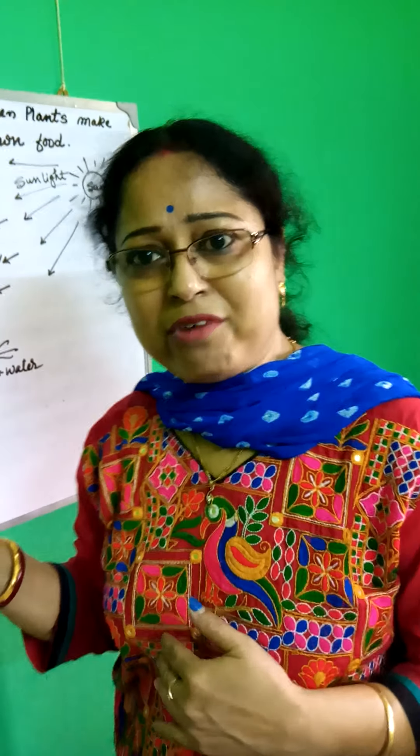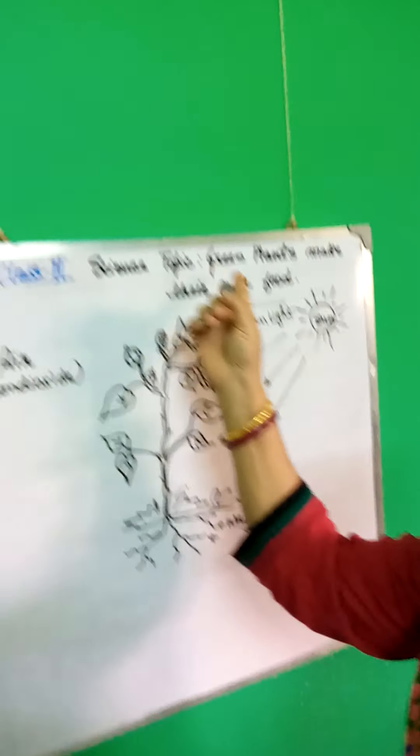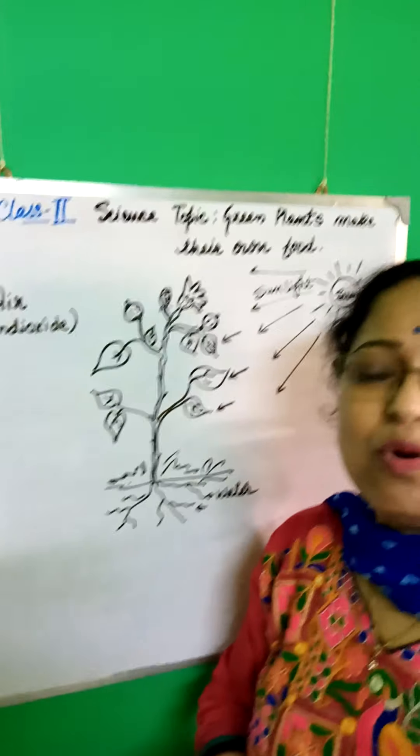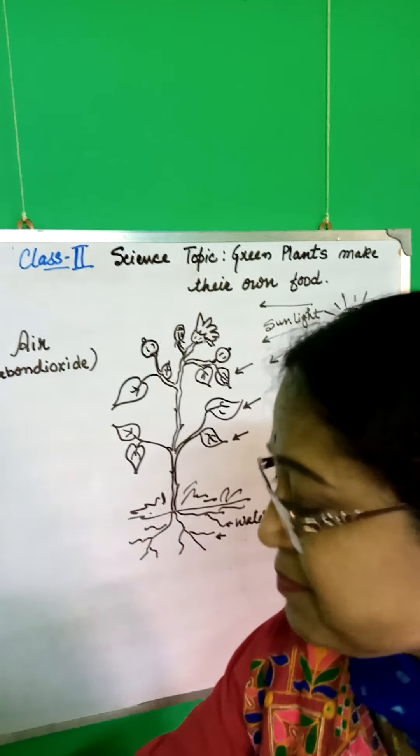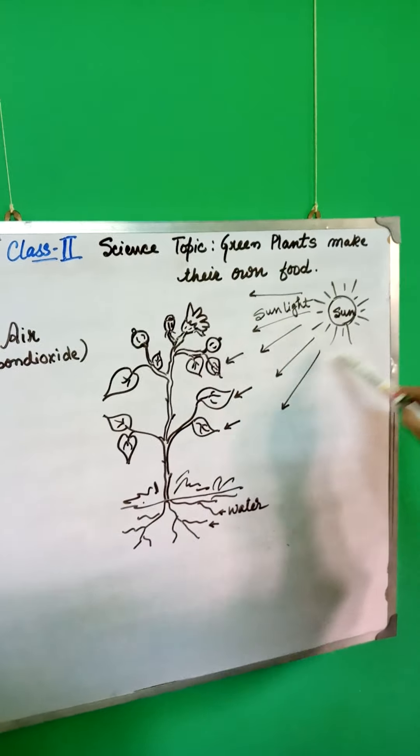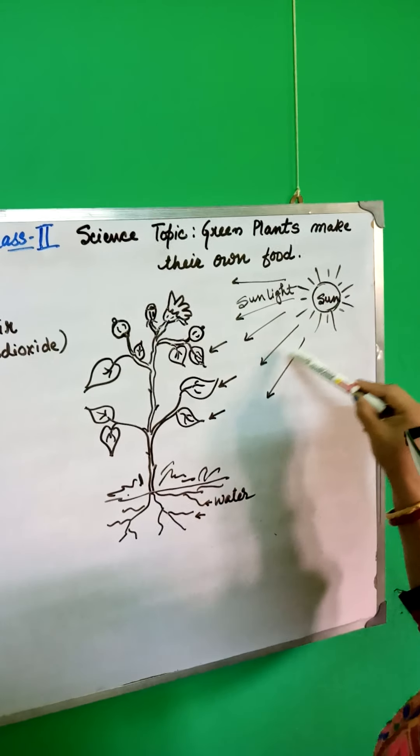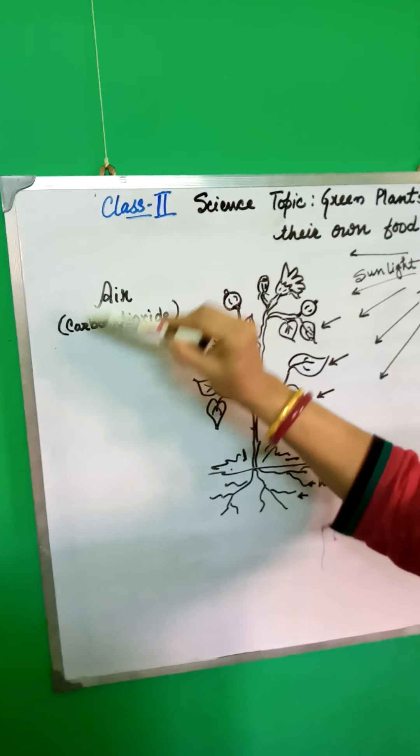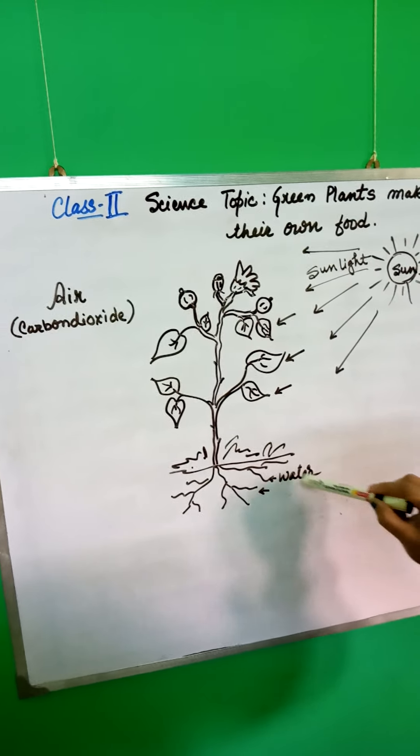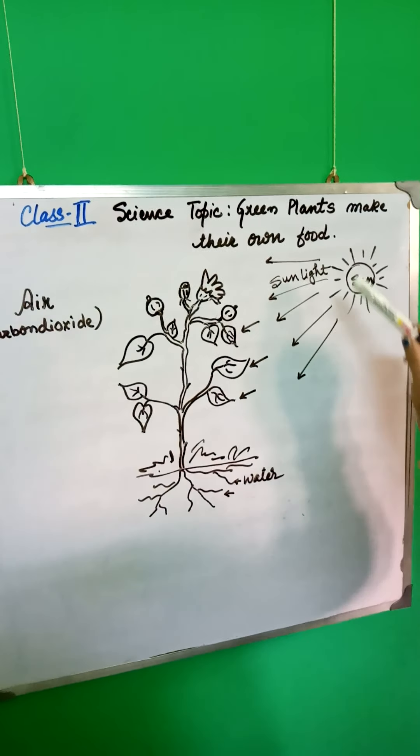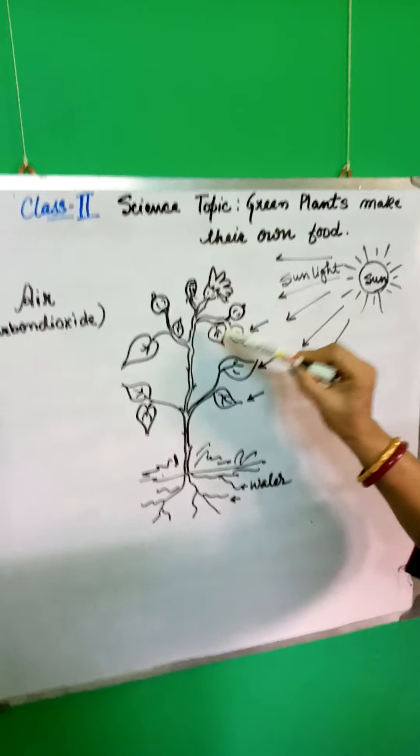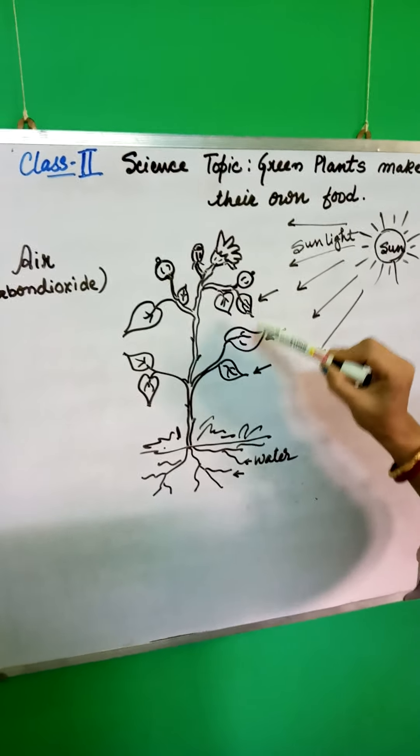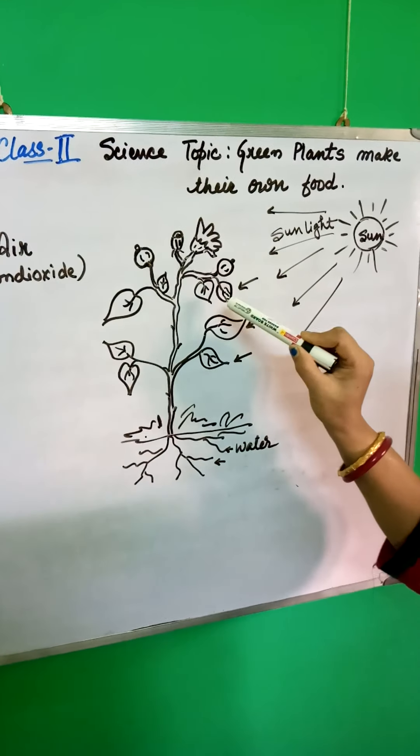But in case of plants, plants need few things to make their own food. See here, this is sunlight. Plants need, green plants need sunlight, air and water. From the leaves, the leaves absorb green light. The green leaves absorb sunlight to make food.